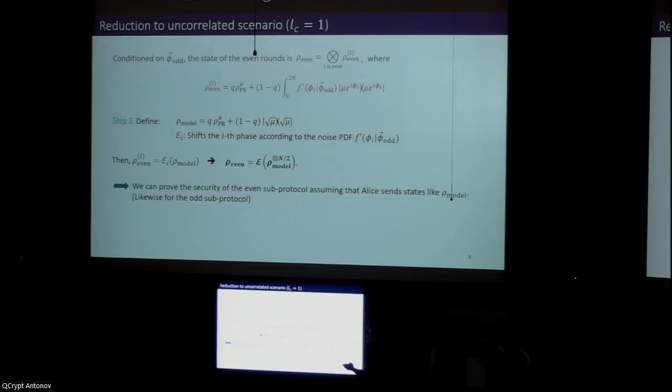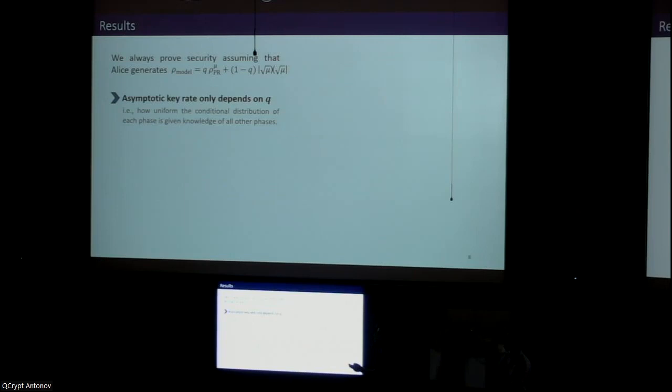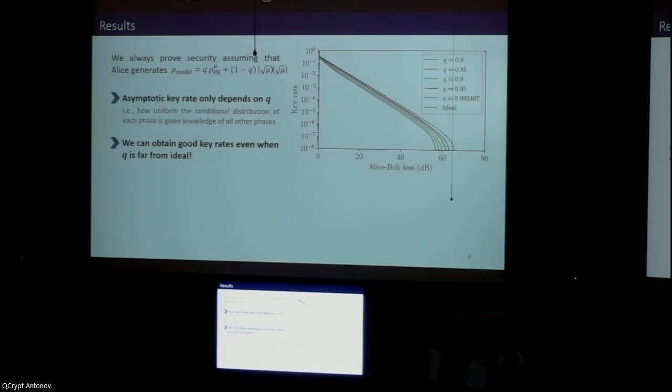Using this approach, we can show that we can prove the security of the even sub-protocol assuming that Alice sends states like ρ_model within the even rounds. We can prove the same for the odd sub-protocol and finish each security proof using numerical methods. Then we obtain a security proof for the whole protocol using composability. This approach is actually generalizable for any correlation length. Not only that, but since we're always able to show that we can prove the security of each sub-protocol by assuming Alice generates states that look like this, actually the asymptotic key rate is independent of the correlation length and it only depends on q, which is what determines how close this ρ_model is to an ideal perfectly randomized coherent state.